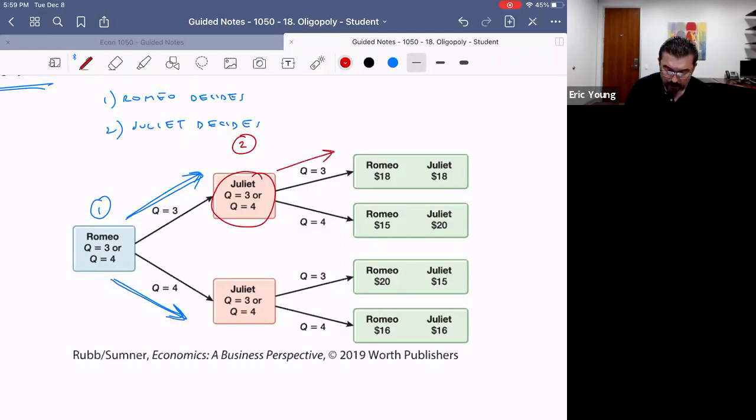And if Romeo decides to make four, then we land down here—Romeo made four, so now Juliet decides whether to make three or whether to make four. So we have the same data that we had in the payoff matrix, but the analysis is subtly different because now it's sequential. So now what's going to happen is Juliet is going to have to decide what to do.